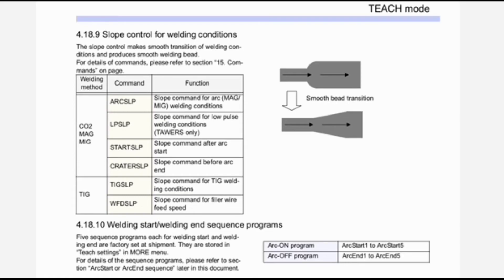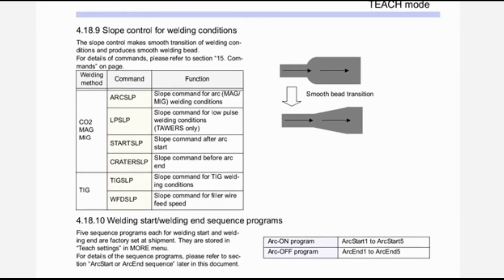The slope control makes a smooth transition of welding conditions and produces a smooth welding speed. Welding method command functions: CO2/MAG-MIG command; R-SLP slope command for ARC-MIG welding conditions; L-P-SLP slope command for low-pulse welding conditions; START SLP slope command after arc start; CRATER SLP slope command before arc end; TIG SLP slope command for TIG welding conditions; WFD SLP slope command for filler wire feed speed.